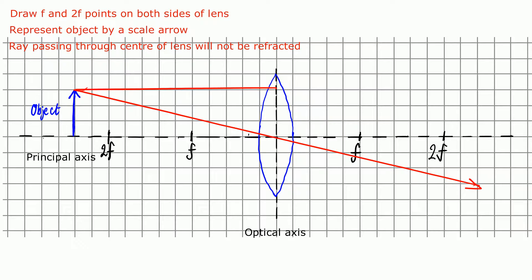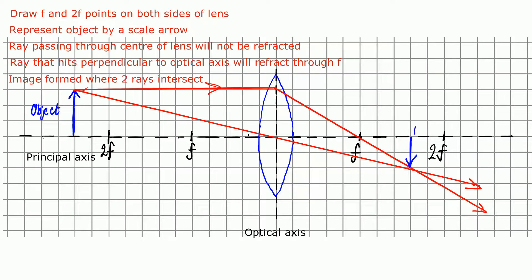And then your second one you draw is a ray that comes parallel with the principal axis and hits the optical axis at 90 degrees. Now, it turns out that that ray will be refracted inward so it passes through the focal point F. And then when you do that, the two rays will intersect somewhere. And that point at which those two rays intersect, that is where your image will be formed. So then you draw a second arrow with the arrowhead at that point where those two rays intersect.